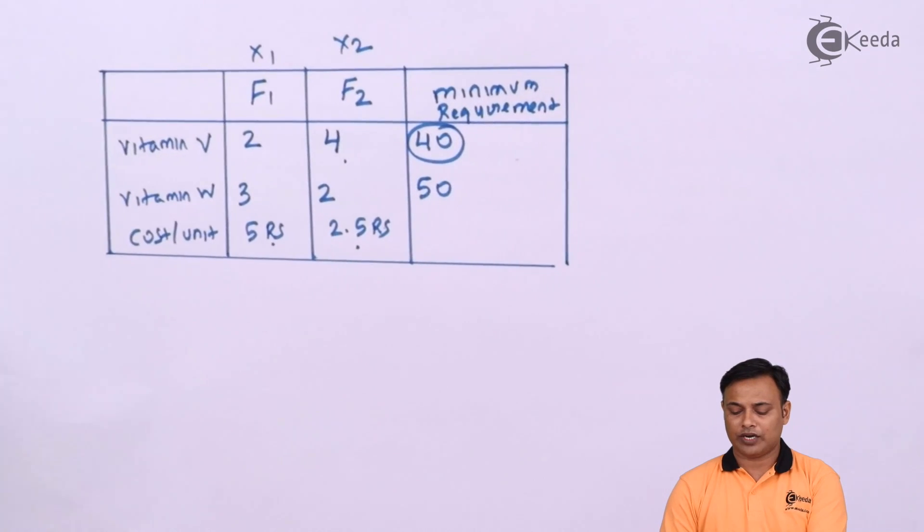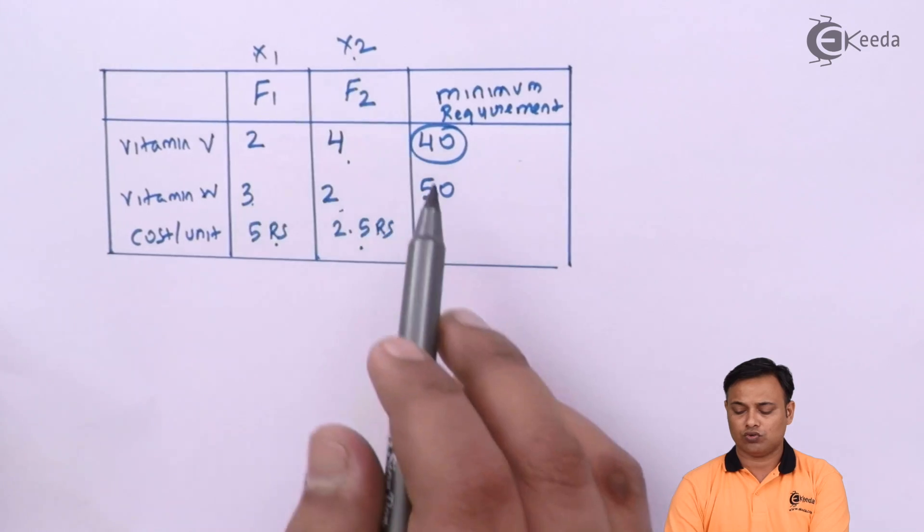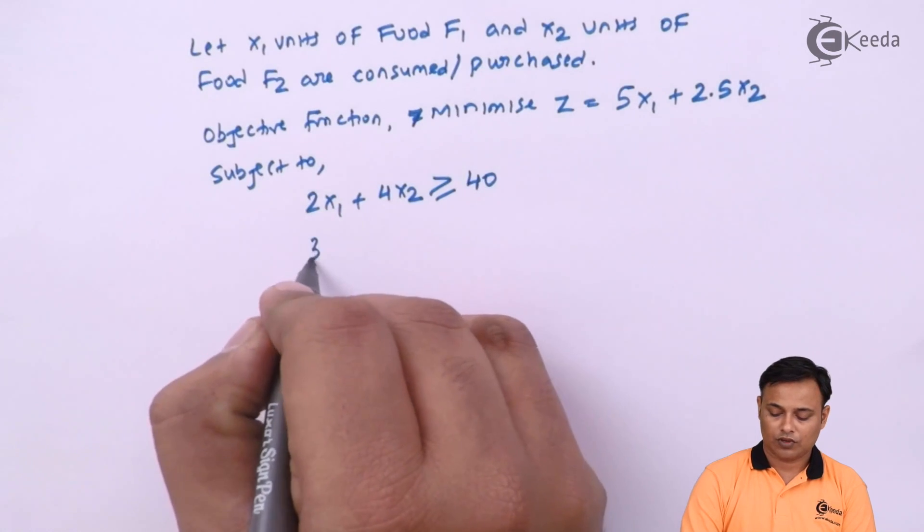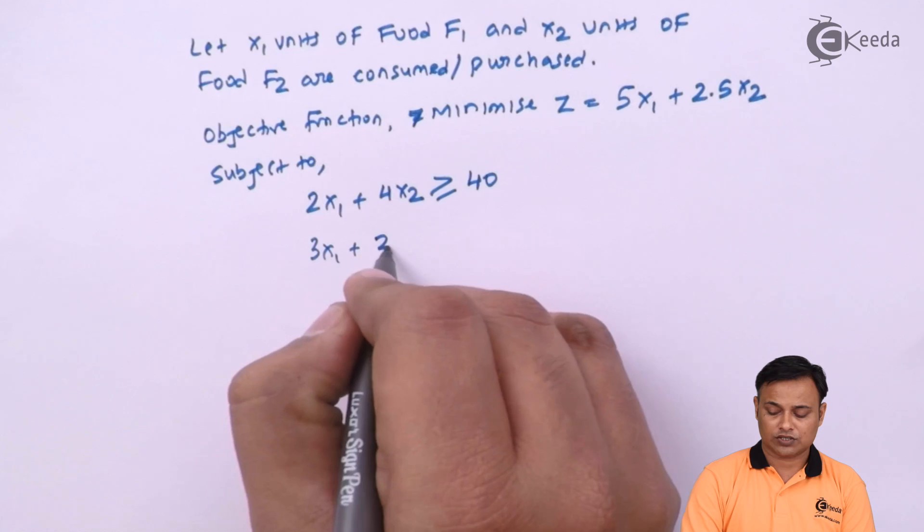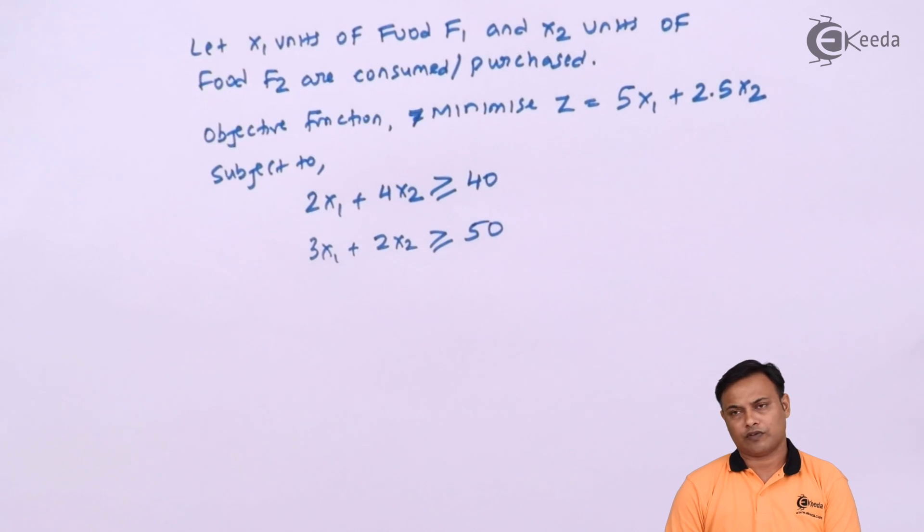In the same manner, for the second product, vitamin W, we have 3x1 plus 2x2 more than or equal to 50. 3x1 plus 2x2 more than or equal to 50. These are my two basic constraints.